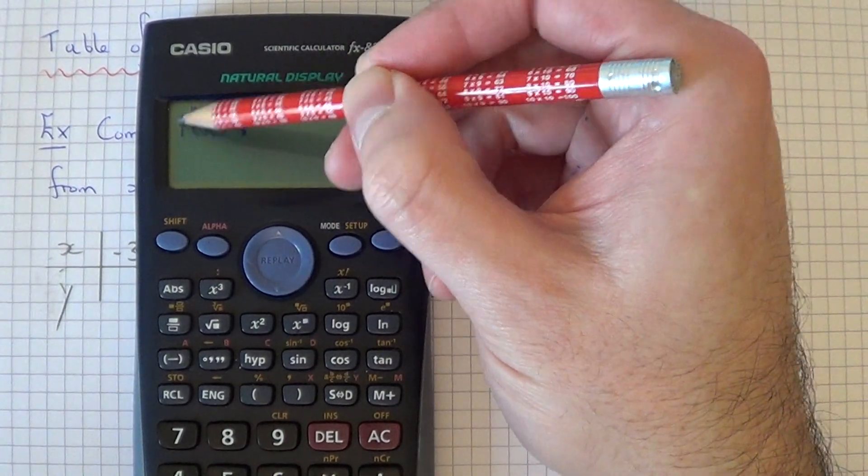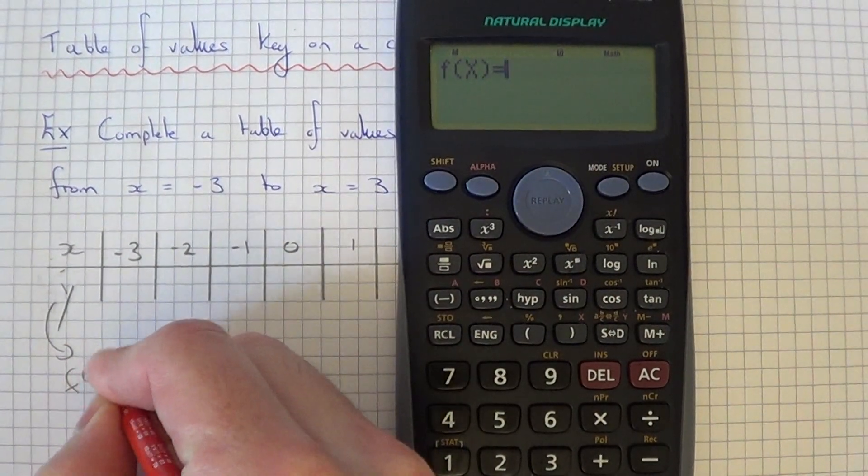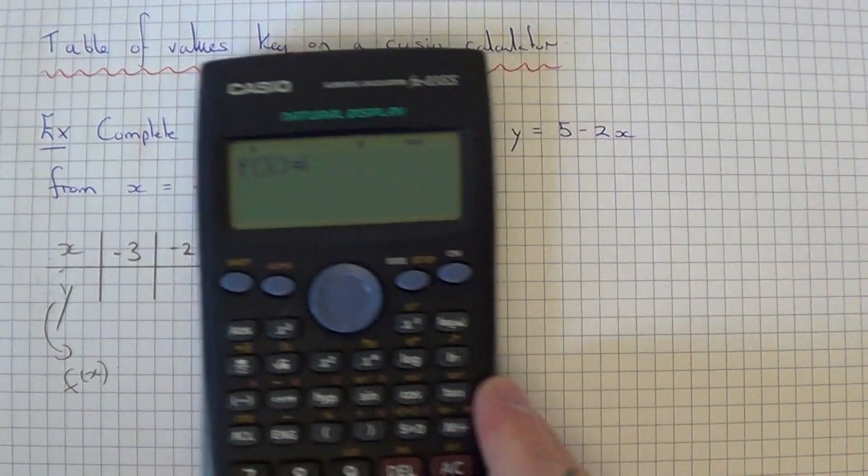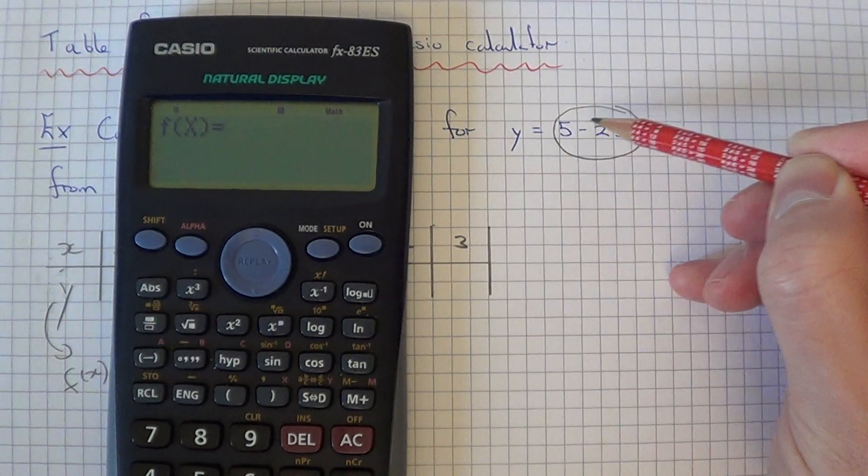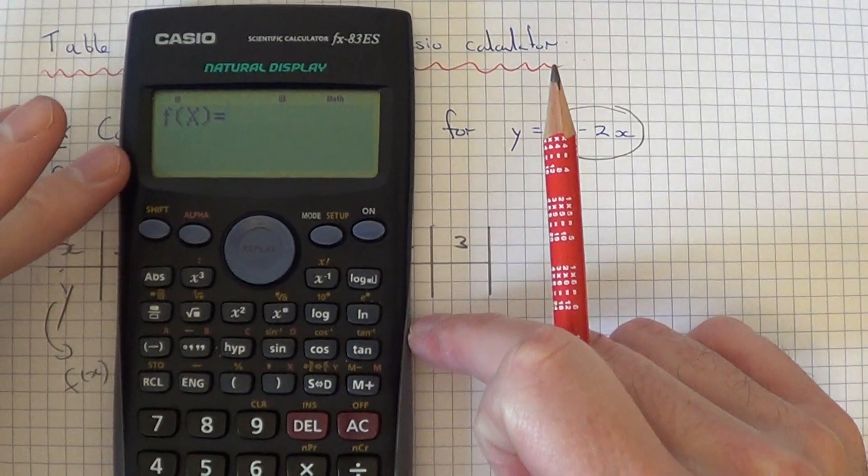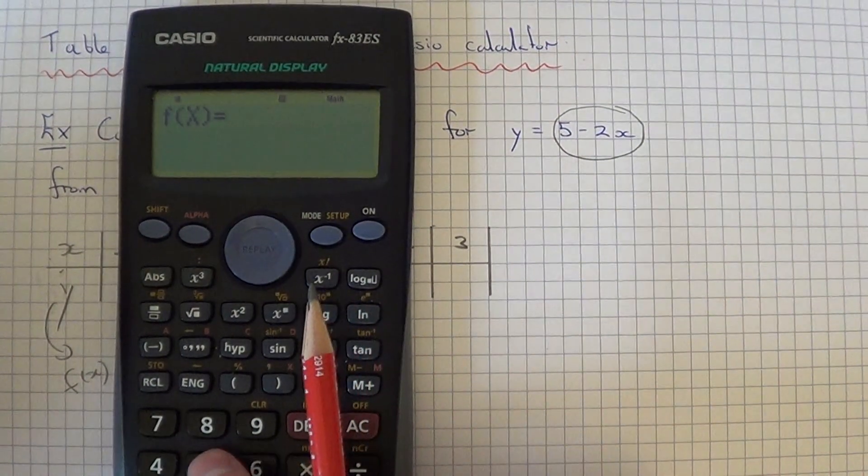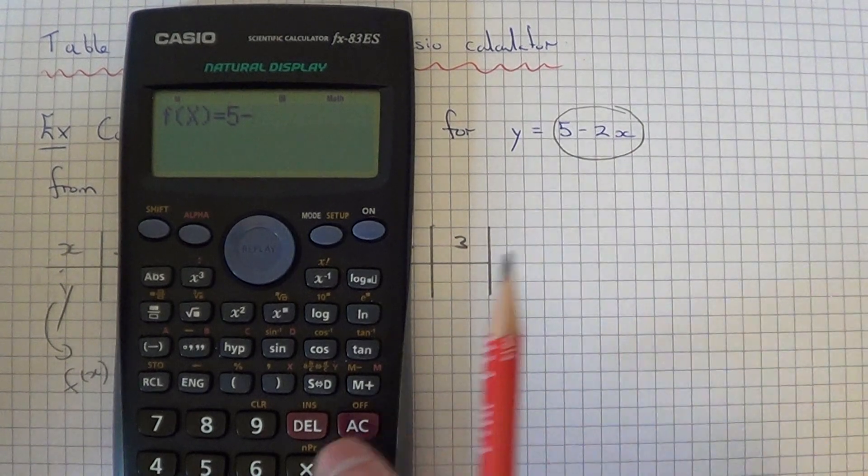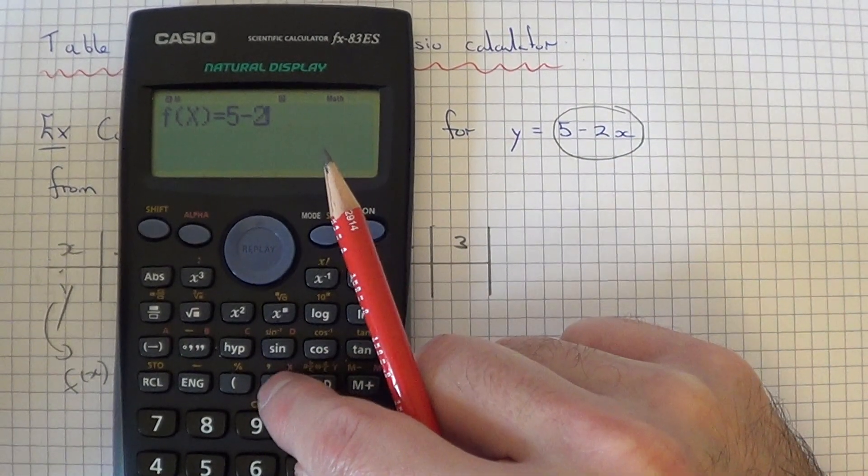Y is the same as f of x. We're just going to type in our graph here which is 5 minus 2x. We can type this in using this alpha key here. If we go 5 minus 2 alpha and the x is on the right bracket key.